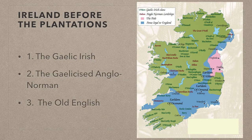In our last video we looked at what was going on in Ireland prior to the adoption of the plantation strategy by the English, and today we will look at what was going on in England and the issues they had with the Irish that led to the adoption of the plantation policy.